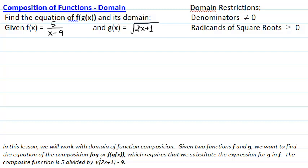In this lesson, we will work with domain of function composition. Given two functions f and g, we want to find the equation of the composite function f circle g of x, or f of g of x. This requires that the expression for g of x is substituted in the place of x in f. Given f(x) = 5/(x-9) and g(x) = √(2x+1), the composite function will be 5/(√(2x+1) - 9).